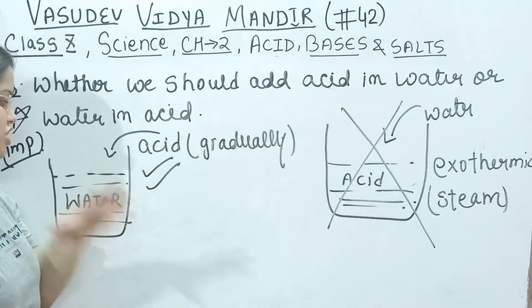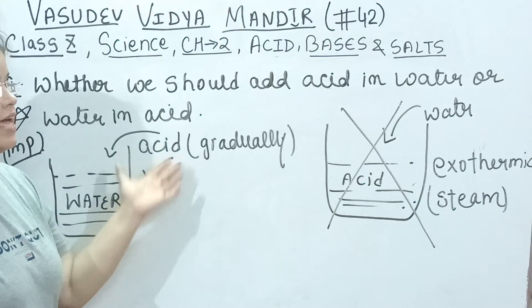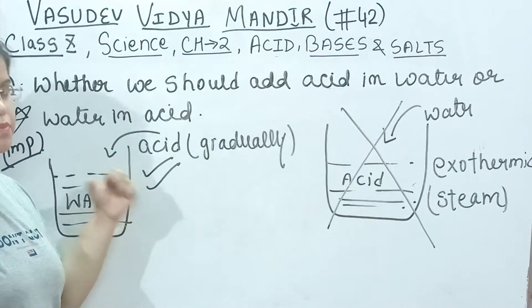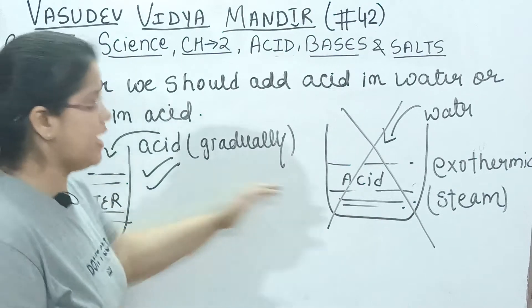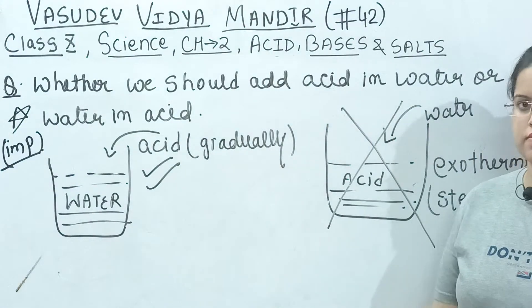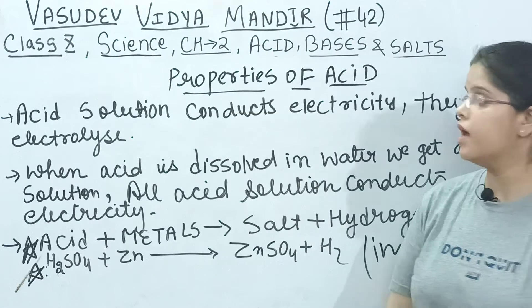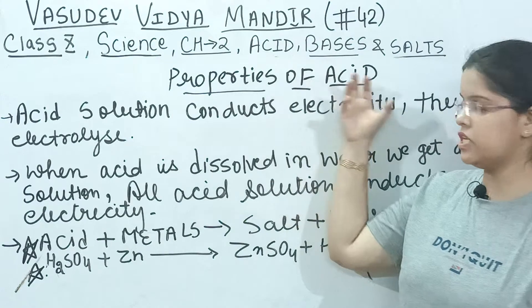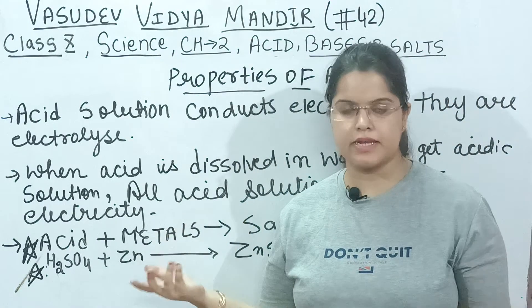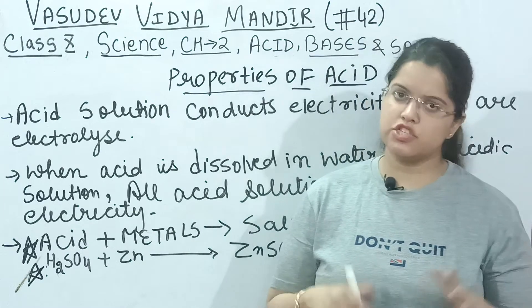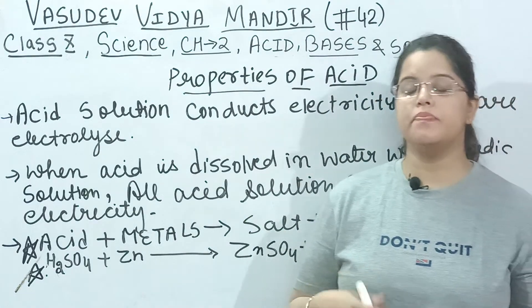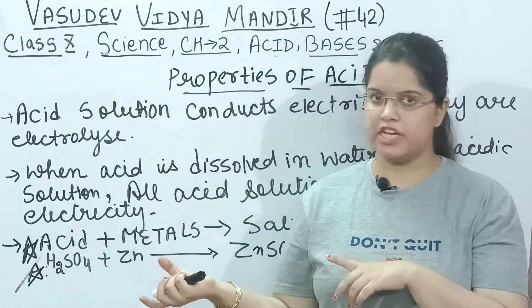So we always add acid to water, where we can mix it safely. Also, acid turns litmus paper color from blue to red.